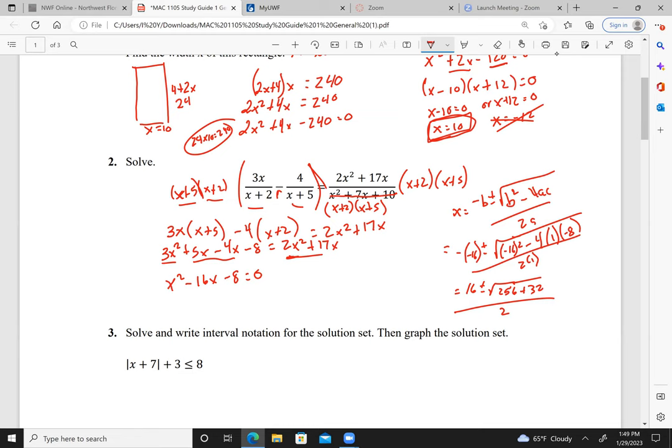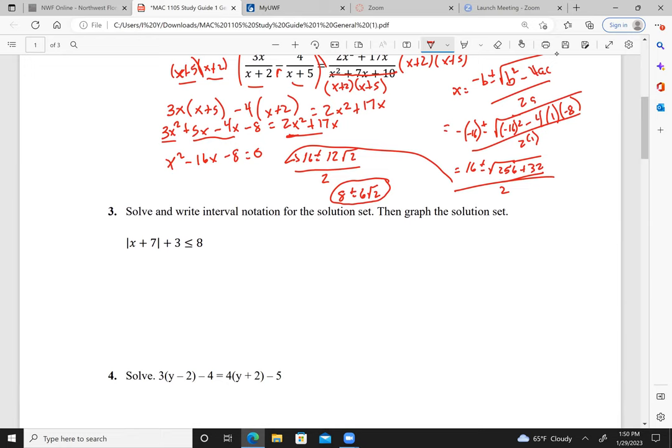This works out to be 6 plus or minus 2 square root of 17 all over 2, which simplifies to 3 plus or minus square root of 17. Not a measurement, so we don't have to worry about positive and negative.